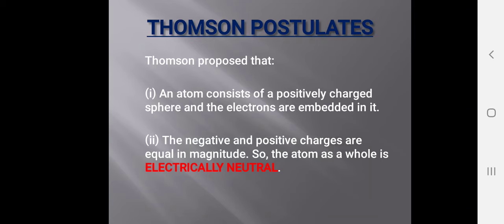Thomson gave two postulates. First, an atom consists of a positively charged sphere and the electrons are embedded in it. Second, the negative and positive charges are equal in magnitude, so the atom as a whole is electrically neutral. These are the two postulates given by J.J. Thomson.